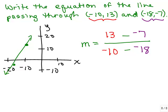So what does this give me if I simplify the top? I have 13 minus negative 7, which is positive 20. And in the denominator, minus and negative is going to be plus, so I have -10 plus 18, that will give me 8, so that reduces dividing the top and bottom by 4 to 5 halves.